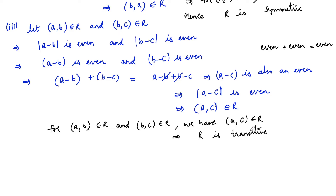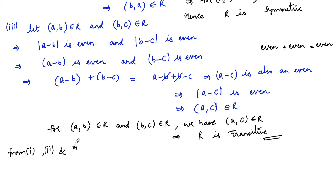So R is reflexive, symmetric, and also transitive. From steps 1, 2, and 3, we can say that R is an equivalence relation.